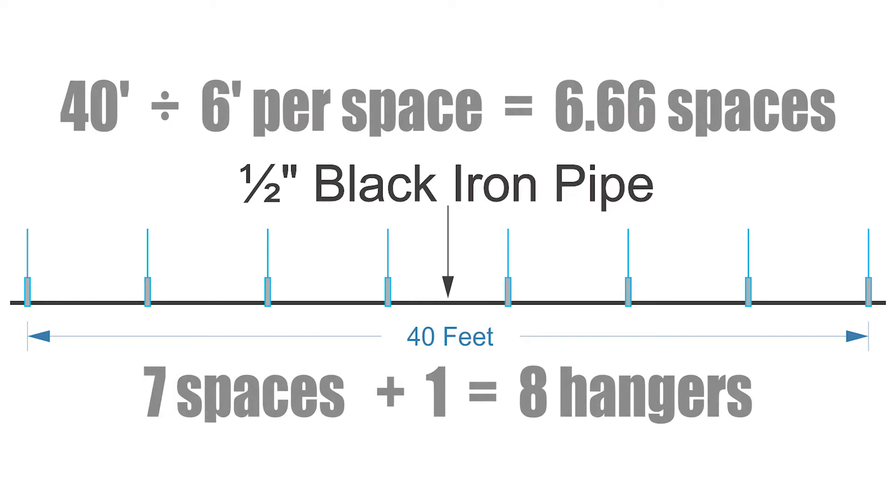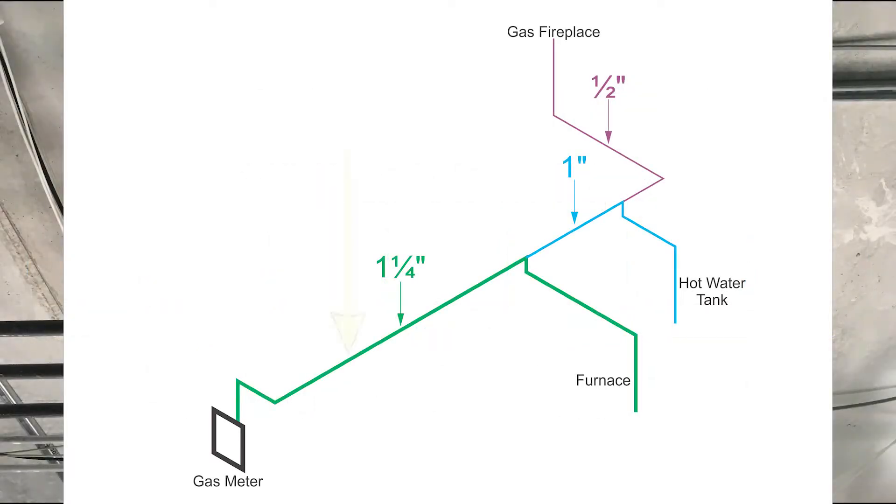Now let's look at a whole home system. I have one and a quarter inches coming from the gas meter to the first furnace. It branches off to one inch that goes down to the water tank, and the last leg is all half inch. It's color coded so you can see where the pipe remains the size we're dealing with.